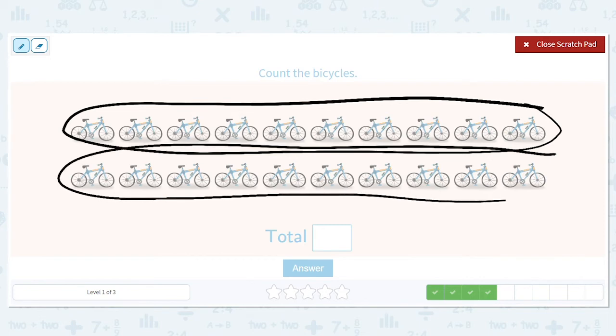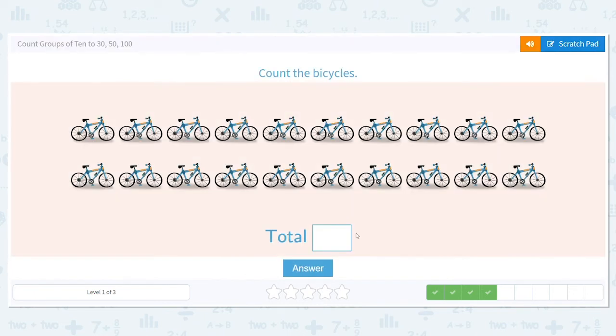And it's okay if your circle, your ring around it isn't perfect. So let's count by 10s. We have 10 and we have another row of 10. So 10 and another 10 makes 20. So what's the total number of bicycles? 20. We have 20 bicycles.